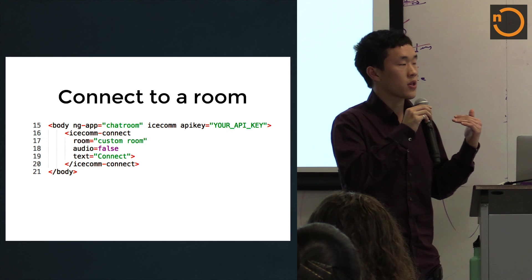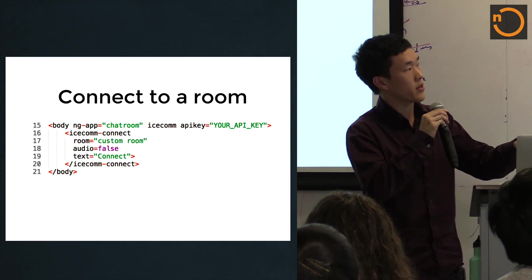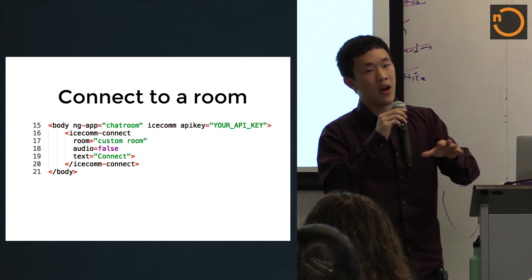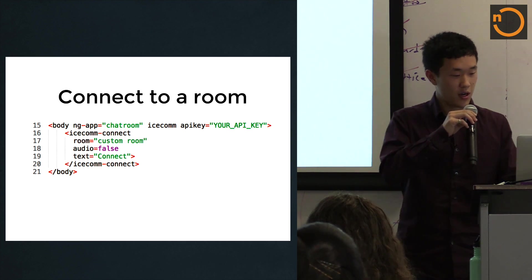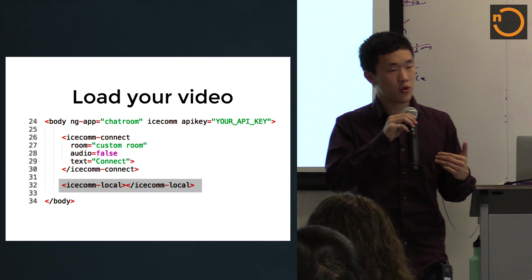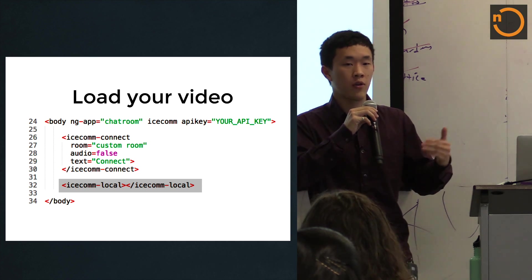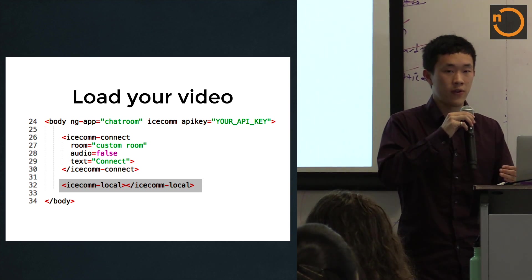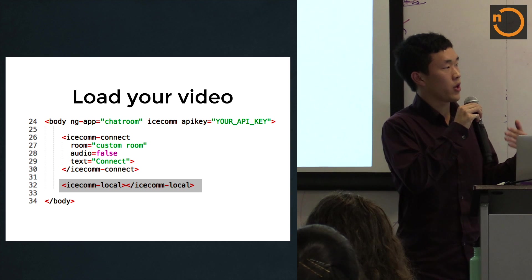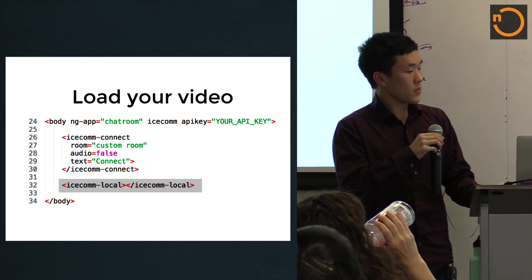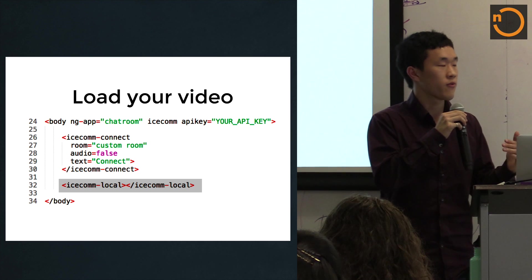We're adding a lot more features to make the connect directive more dynamic, but for now those are the initial features. This directive alone gives you a button to connect to a room. When you're inside a room, you have access to other people's streams. The next step is there are two things you want to do: load your local video stream, and load other people's videos. There is one directive to load your own video — wherever you put it is where your local video will appear in the DOM once you receive a video element. You can place it anywhere you want in your layout.